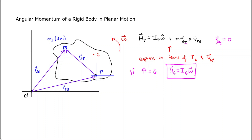If P equals G, we have the nice formula H_g = I_g · ω, which you may have been halfway expecting if you recall rotational motion from first-semester physics. Angular momentum equals I times omega — that's true when you're talking about the center of mass G. But what if you're not talking about the center of mass? We'd still like to express everything in terms of things that reference the center of mass, the most important single point in the rigid body.